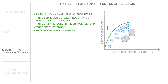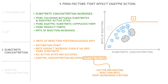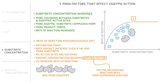This increase in rate only continues up to a certain point. After this, the rate of reaction plateaus, or levels off, and we call this the saturation point. The rate doesn't increase anymore even if we have more substrate, because all the active sites are already occupied. At this point, the enzyme concentration becomes the limiting factor — the factor that's preventing the reaction rate from increasing any further. To increase the rate of reaction now, we need to add more enzymes instead.